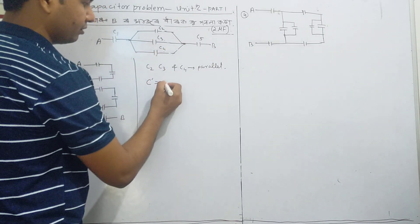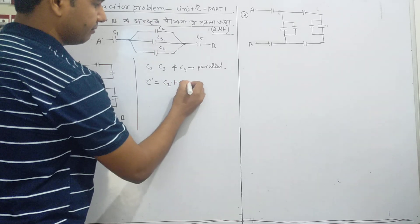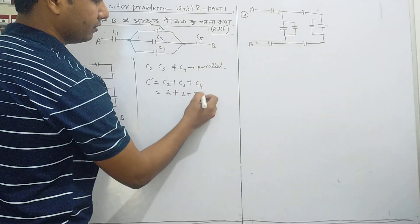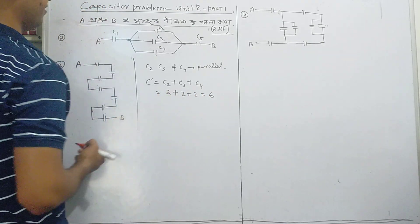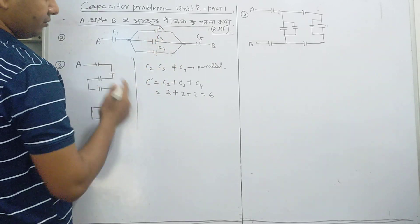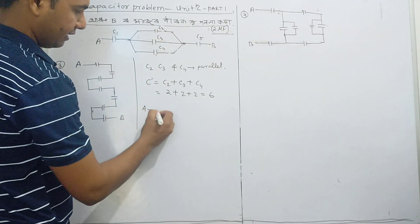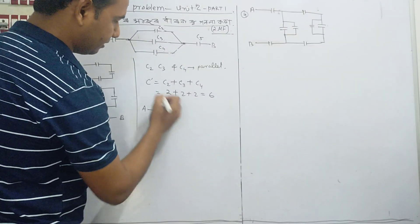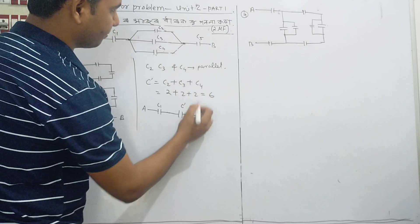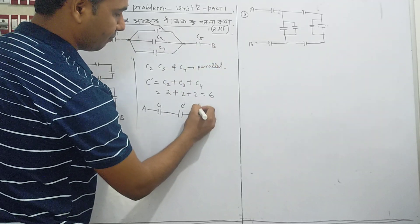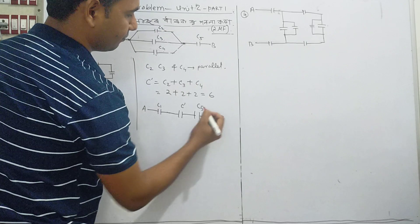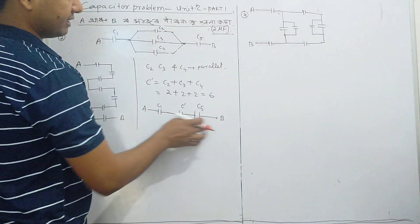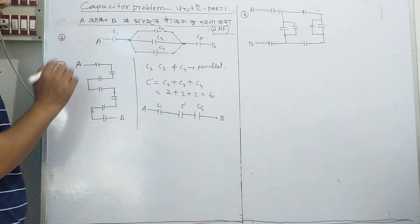The central fields — the answer will prove that C dash equals C2 plus C3 plus C4 in parallel, so putting 2, 2 and 2 gives 6 microfarad. Let me redraw this.